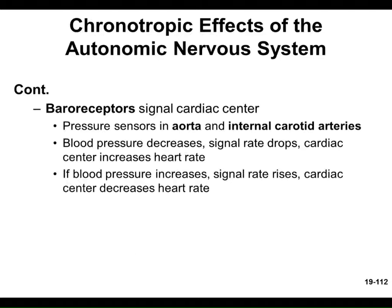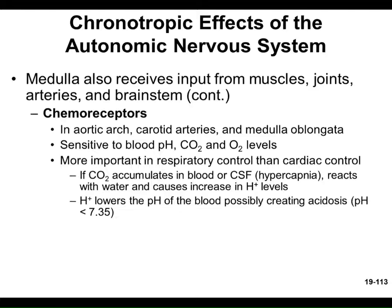If blood pressure is decreasing, the baroreceptors signal the medulla oblongata to increase heart rate — a positive chronotropic effect. If blood pressure is too high, the signal tells the heart to slow down — a negative or parasympathetic-like effect. In addition to baroreceptors, there are chemoreceptors in essentially the same locations — the aortic arch, carotid sinuses, and also in the medulla itself.